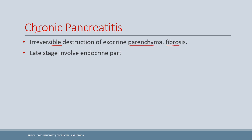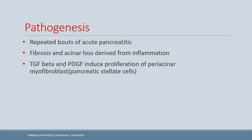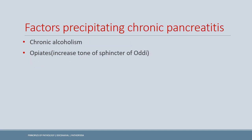In chronic pancreatitis, the damage is irreversible — irreversible parenchymal damage leads to fibrosis. In the late stage, the endocrine part is also involved. Repeated bouts of acute pancreatitis are the basic pathogenesis behind chronic pancreatitis, leading to duct distortion, altered pancreatic secretion, and accumulating fibrosis. TGF-beta is involved in fibrosis, and platelet-derived growth factor leads to proliferation.